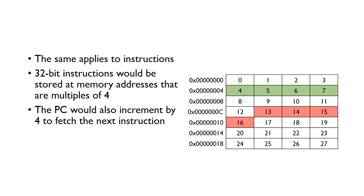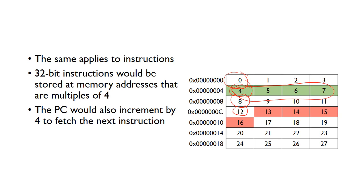The same also applies to instructions. If the instructions are 32 bits, these will each be stored in memory addresses that are multiples of 4. That means the program counter needs to increment by 4 to fetch the next instruction. So the program counter won't go 0, 1, 2, 3 - it needs to fetch at 0, 4, 8, 12, and so on, assuming each instruction is stored in one of these 4-byte rows.